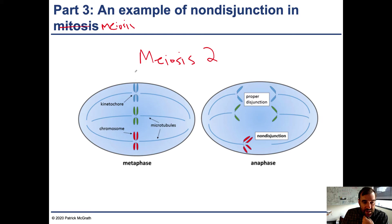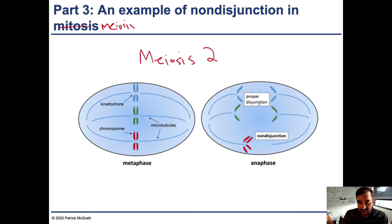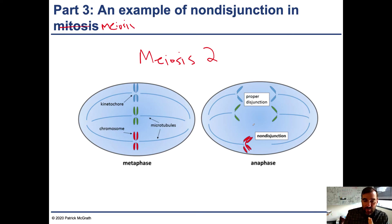This diploid individual has a diploid number of six with three unique chromosomes: chromosome 1, chromosome 2, and chromosome 3. Chromosomes 1 and 2 have properly segregated their sister chromatids into distinct cells, but when non-disjunction occurs, the protein bridge holding the sister chromatids together never separates. Both chromatids are pulled to one side, and one cell ends up with no chromosome 3.